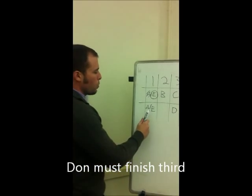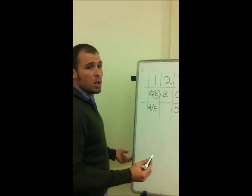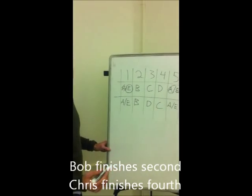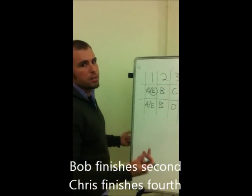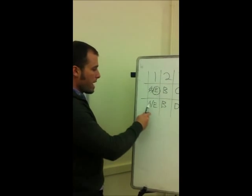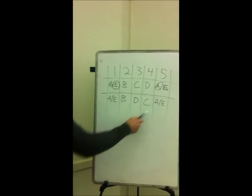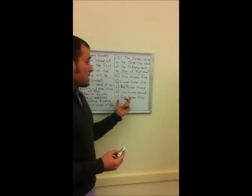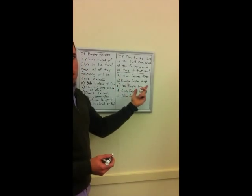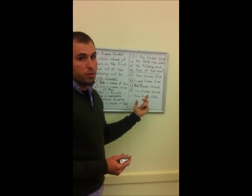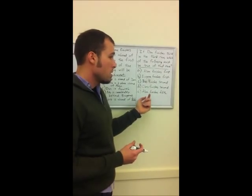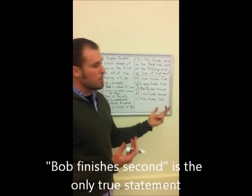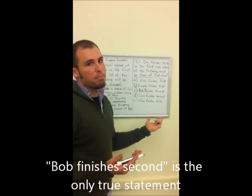If Don finishes third, we don't really know which of these is Alan and which one is Eugene, but we don't really need that. But what we do know is that Bob is going to come in spot two and then Chris is going to come in spot four, because Bob always has to come before Chris according to the constraints of the original problem. So now we have Alan or Eugene, Bob, Don, Chris, and then Alan or Eugene. And as it turns out, that's actually all we need to solve the problem. Let's take a look at the potential answers here. Alan finishes first, we don't know that for sure. Bob finishes second, that is true, so that's our answer. But let's just take a look at the other two. Chris finishes second, not true. Alan finishes fifth, again we can't be sure of that.